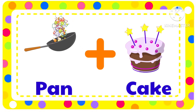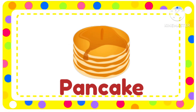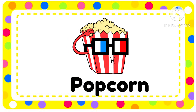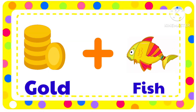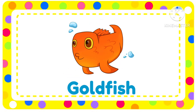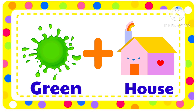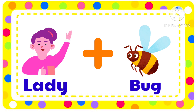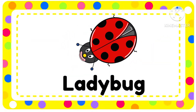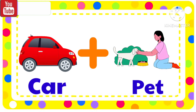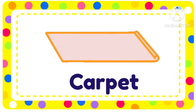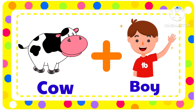Pan plus Cake — Pancake. Gold plus Fish — Goldfish. Green plus House — Greenhouse. Lady plus Bug — Ladybug. Car plus Pet — Carpet. Cow plus Boy — Cowboy.